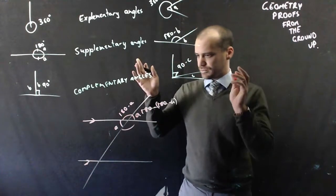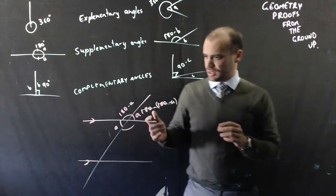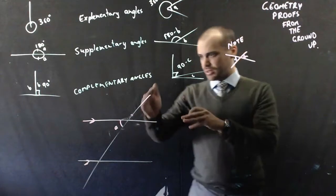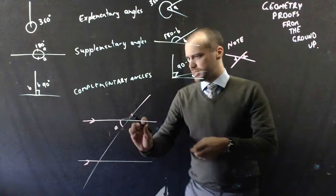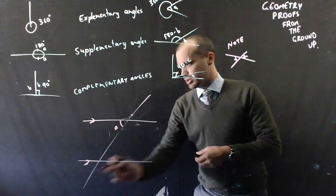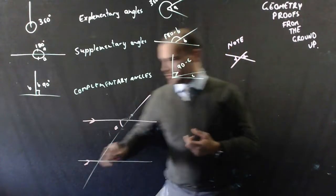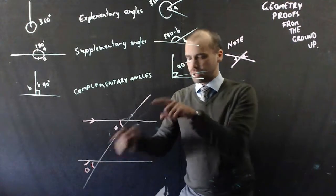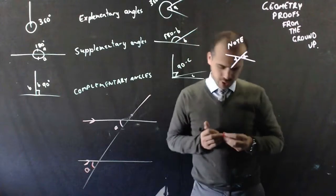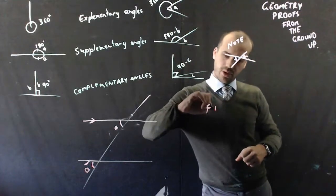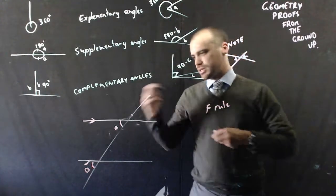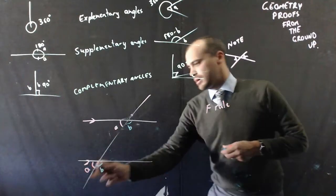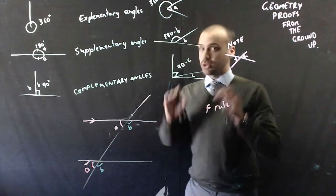Now let's get into the actual parallel lines and the transversal itself. These lines are heading in the same direction, which means they make the same angle with the transversal, so essentially this block here is the same as this block here. These angles are called corresponding angles — they're in the same spot in each block and we can say they're equal. You might have heard it called the F rule before, because if you mark those corresponding angles you can trace out an F shape.